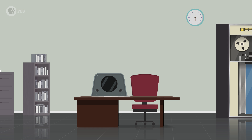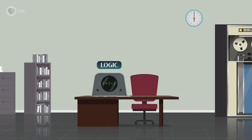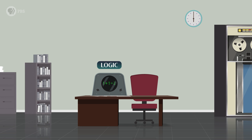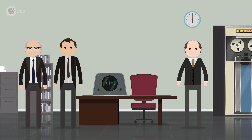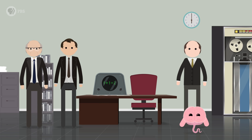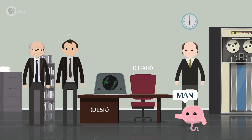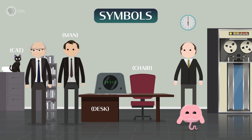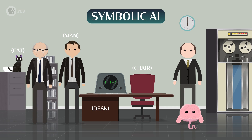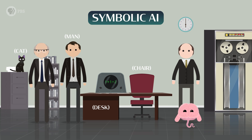Computers are logical machines that use math to do calculations, so logic was an obvious choice for the General Problem Solver's problem-solving technique. Representing the problem itself was less straightforward. But Newell, Simon, and Shaw wanted to simulate humans, and human brains are really good at recognizing objects in the world around us. So in a computer program, they represented real-world objects as symbols. That's where the term symbolic AI comes from, and it's how certain AI systems make decisions, generate plans, and appear to think.